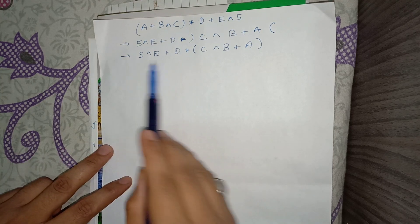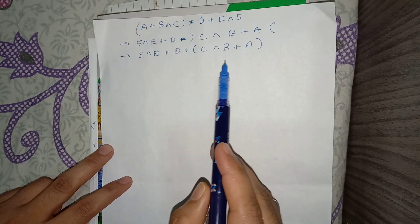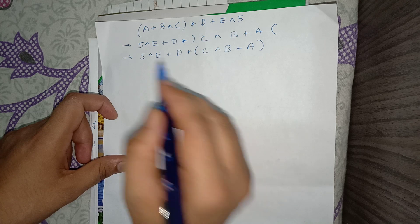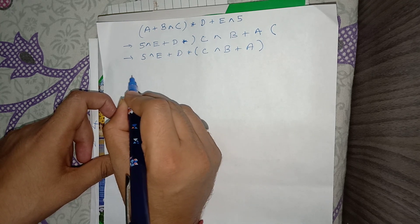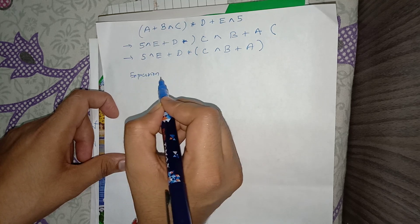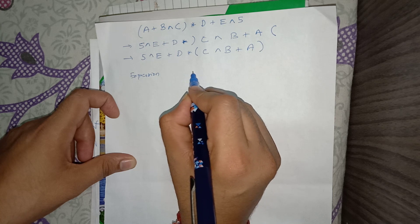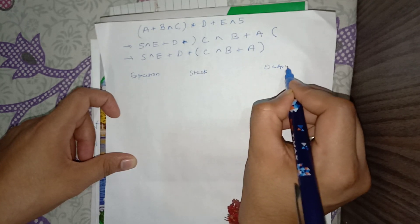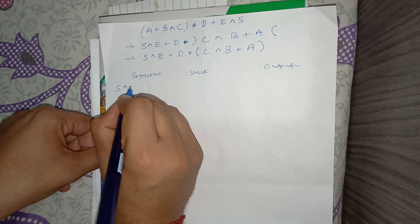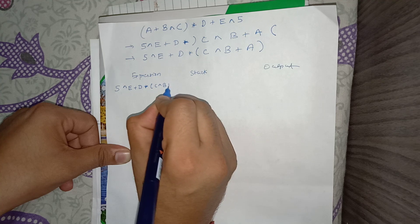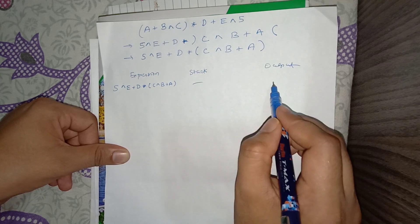Now we have to convert this expression into postfix form. We will use three columns: the first is the expression (our input), the next is the stack, and the third is the output. Initially our stack is empty and our output is empty.